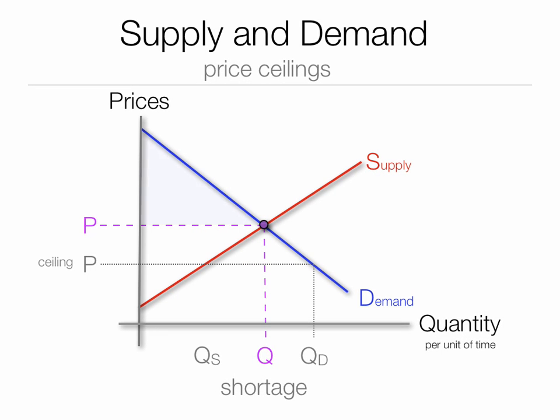There's also an impact on consumer surplus and producer surplus from what we've been talking about. The blue and red areas at the market price represent consumer surplus and producer surplus respectively — that's what those surpluses look like under normal market conditions.